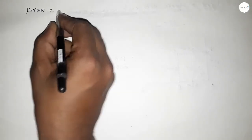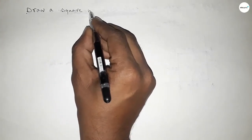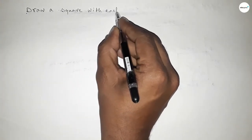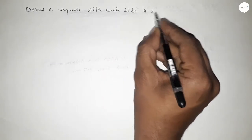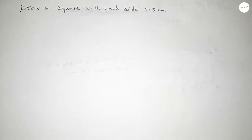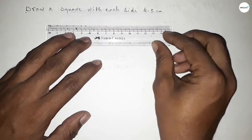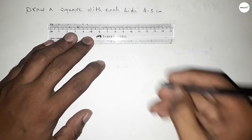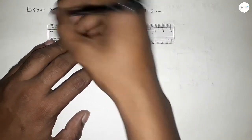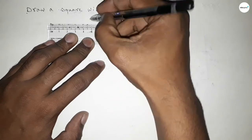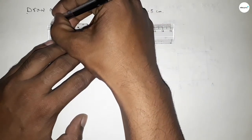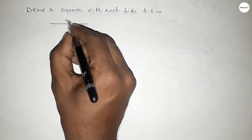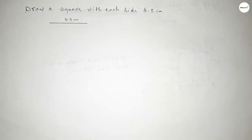Hi everyone, welcome to SSR Classes. Today in this video we have to draw a square with each side 4.5 centimeters. Let's start — first drawing a length of 4.5 centimeters: 0, 1, 2, 3, 4, and this is 4.5.